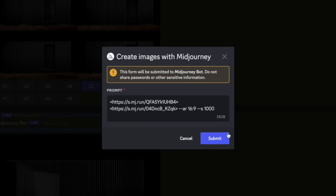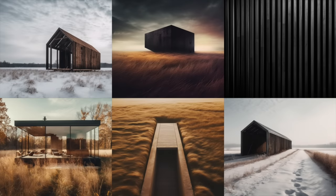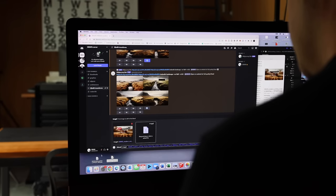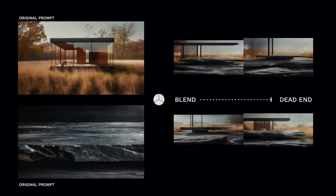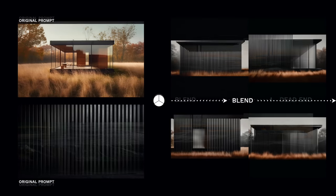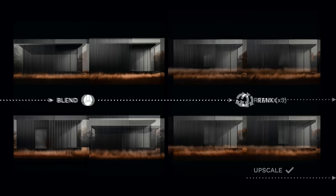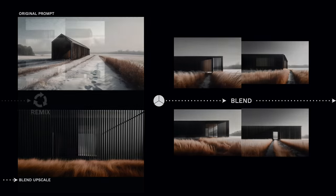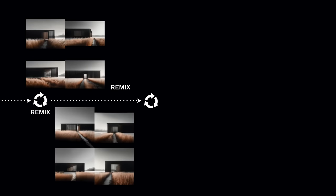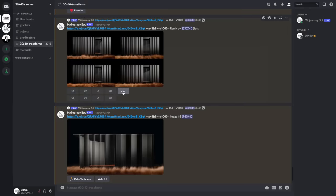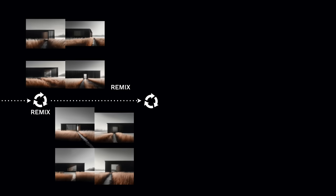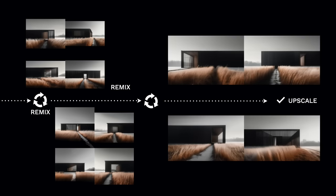I'll remix and reprompt until I have a set of base images I'm happy with, and then I'll use those to start blending, which is a key part of the process. Blending takes two and up to four images and combines them. In amongst all of the dead ends, you're going to uncover something really unexpected, and then you use those images to work a similar process. None of these are a first output — they're the result of blending, remixing, and essentially guiding Midjourney to select for certain traits in each iteration, until you end up with a final result you can upscale and use in the next part of your process.